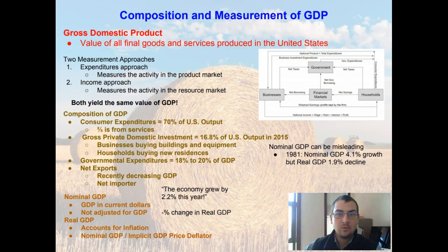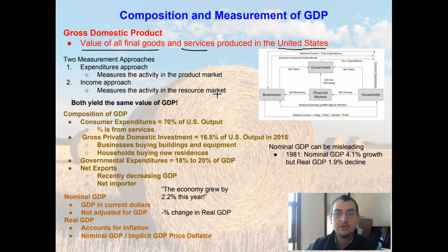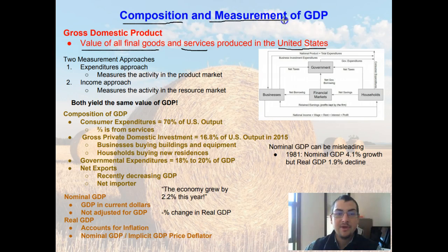In the last video we discussed what GDP is — the gross domestic product — and we said it's the value of all final goods and services produced within the United States. We also discussed the difference between final goods, which are ultimately consumed by a consumer or the government, versus an intermediate good, which is used in businesses to produce other goods. In this video we are going to dive into the composition and the measurement of the U.S. GDP.